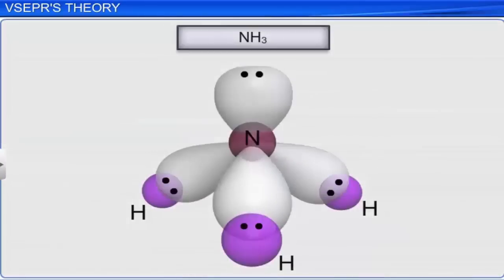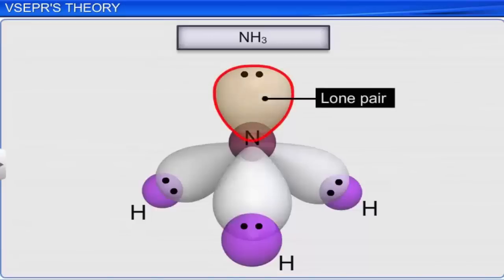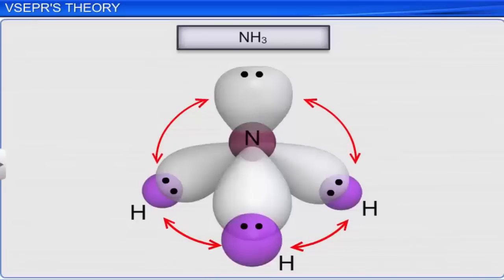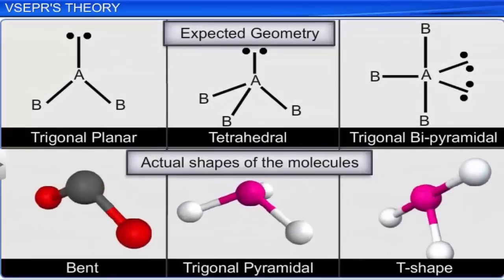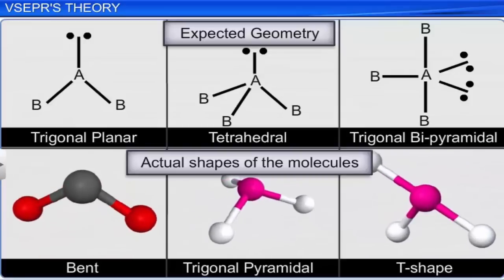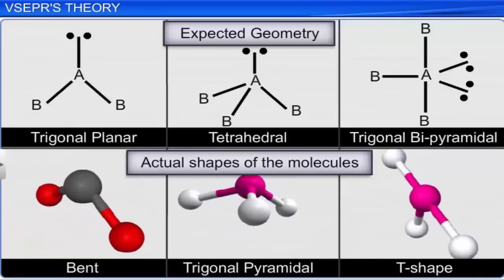However, the geometry of molecules gets distorted due to the presence of lone pair of electrons. Unlike bonded pairs that are shared between two atoms, lone pairs of electrons are localized on the central atom. Due to this, they occupy more space, which results in greater repulsion. Thus, the geometry of molecules with lone pairs differs from the expected regular geometry of molecules having only bond pairs.